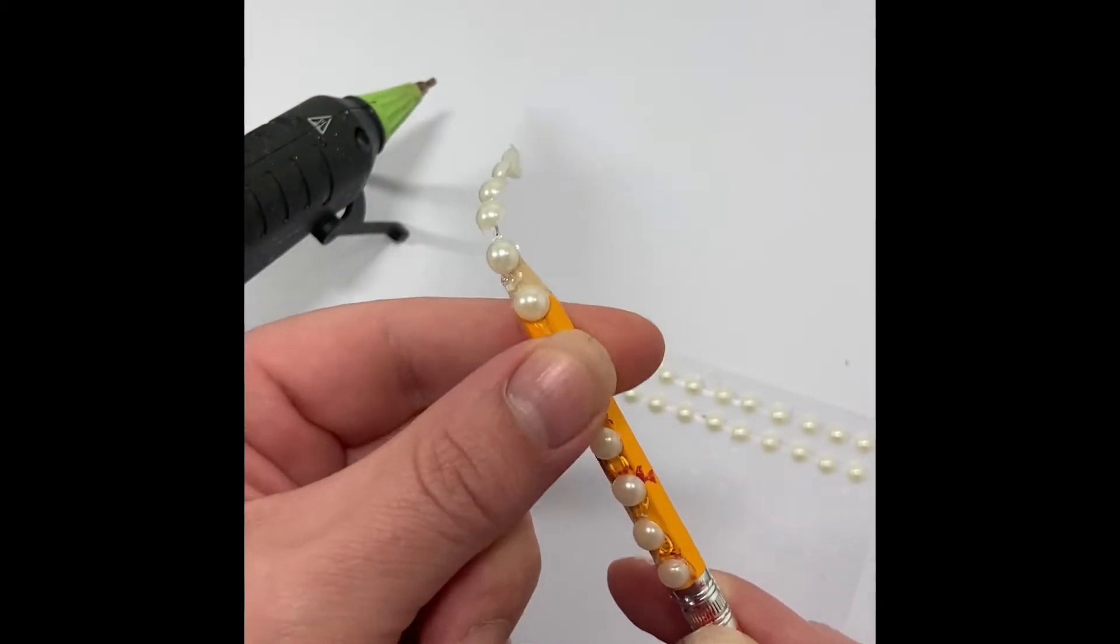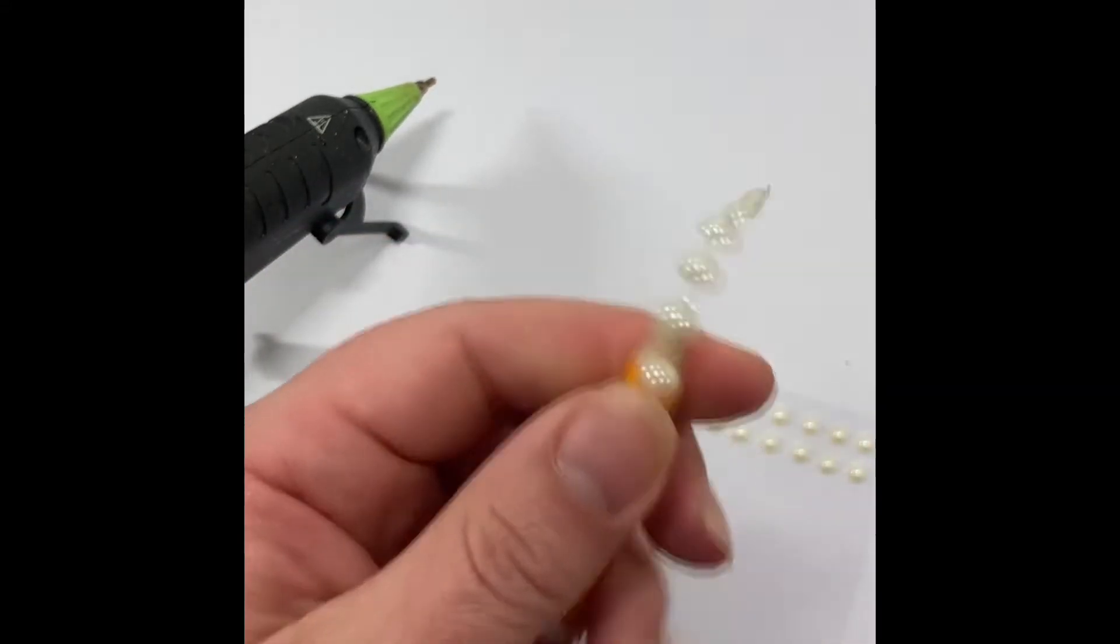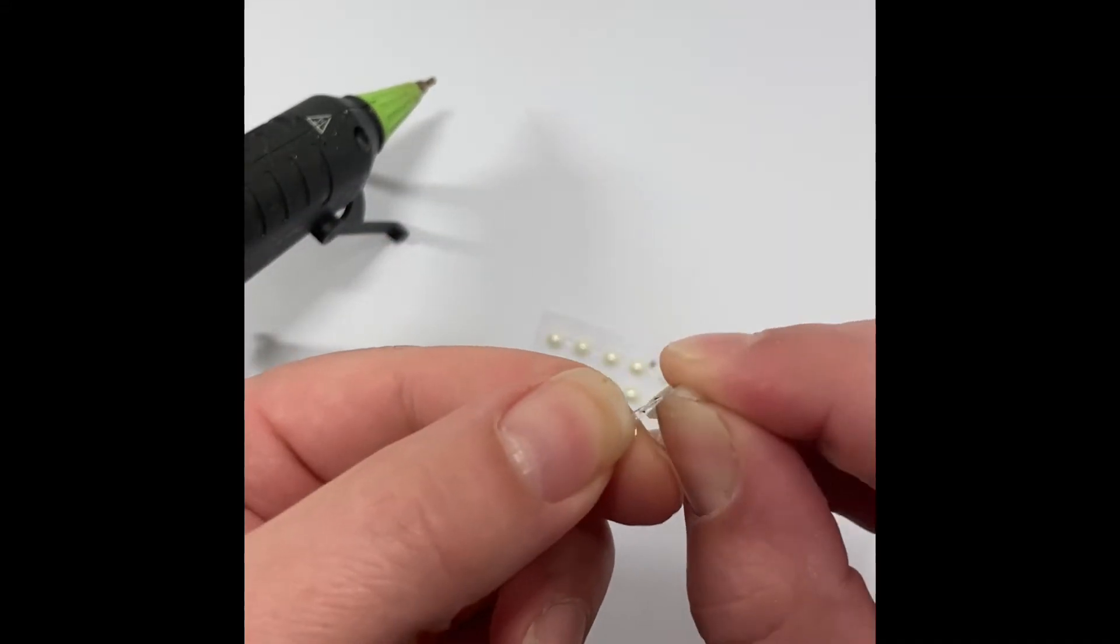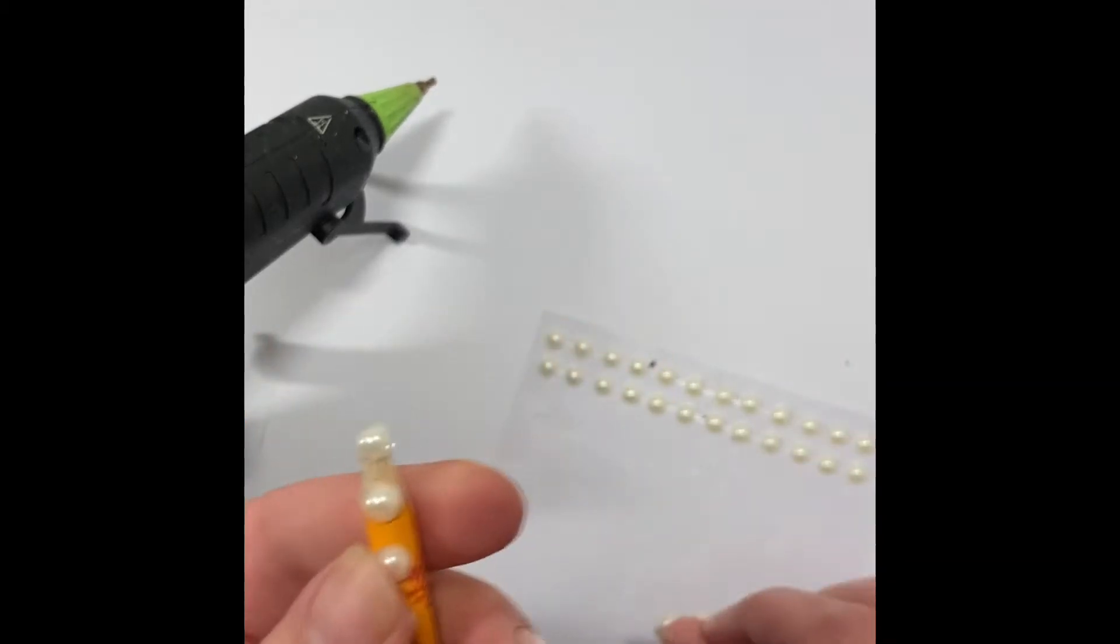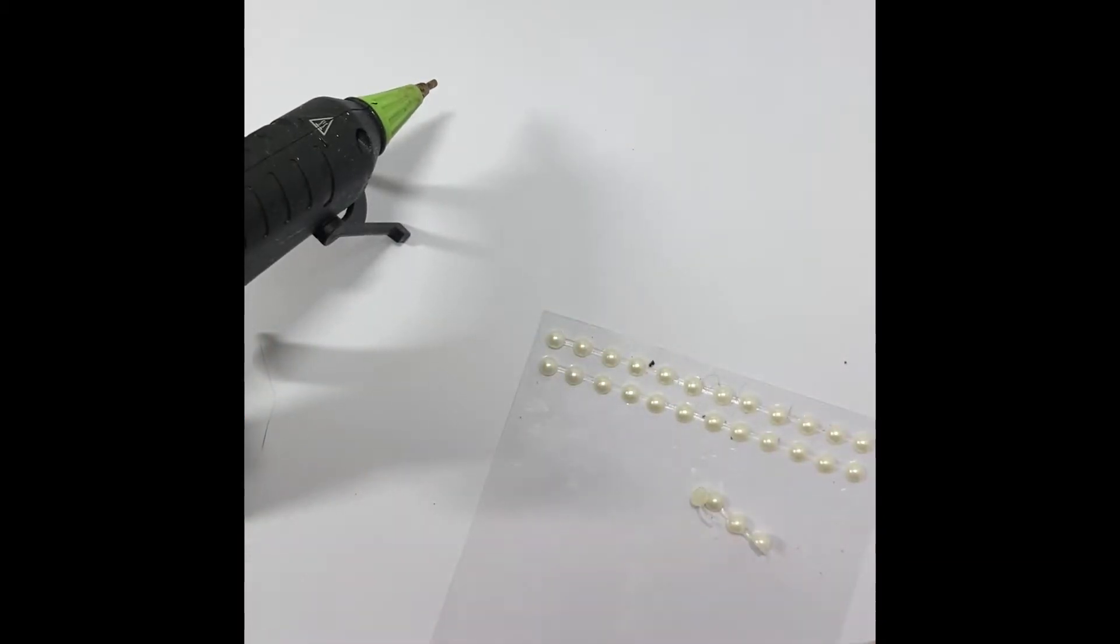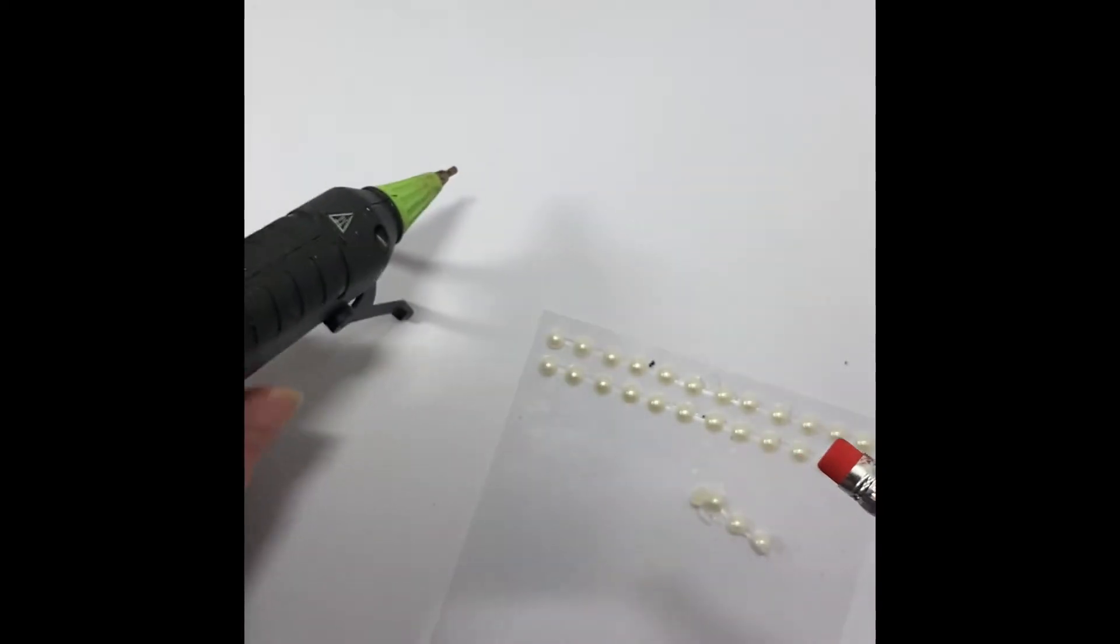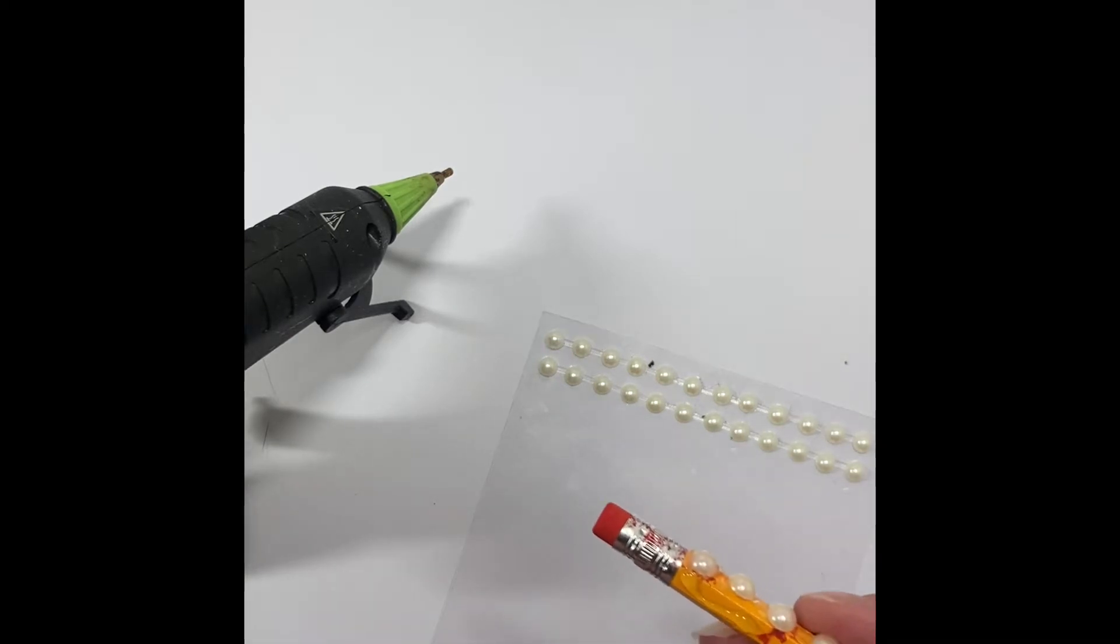Now, as everybody knows, pencils aren't typically perfectly circular barrels. They have planes on them. So we're going to put a bit of hot glue down on the metal part of the pencil and a little way up into the wood and secure our first bead.